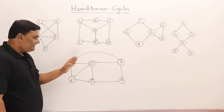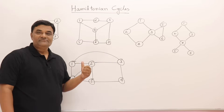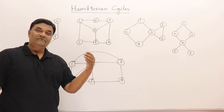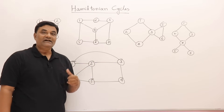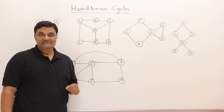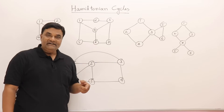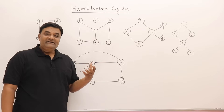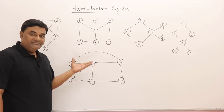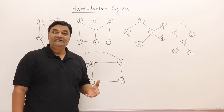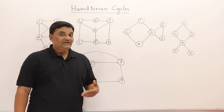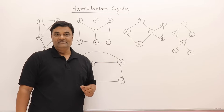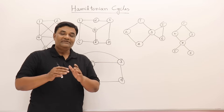If a graph is given, we have to start from some starting vertex and visit all the vertices exactly once and return back to the starting vertex, so that forms a cycle. We have to check if there is any Hamiltonian cycle possible in a graph, if possible then what is that cycle, and if there are multiple cycles we have to find out all of them.